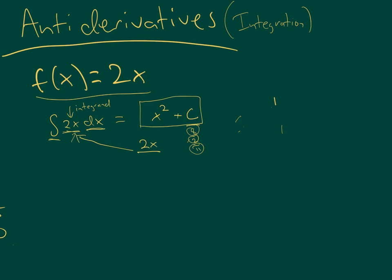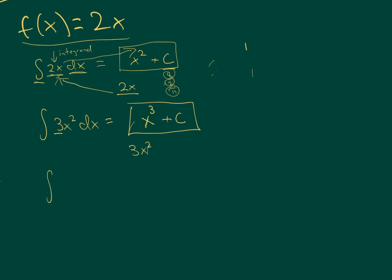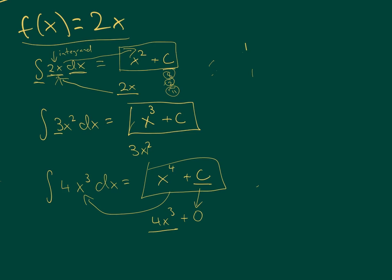Let's try another one. Suppose we have the antiderivative of 3x squared. From the previous example, we saw that our exponent increased by 1. So let's suppose you have x cubed as your antiderivative. If we took the derivative of x cubed, we would end up getting 3x squared. So x cubed plus c does work as the antiderivative there. What if you had the antiderivative of 4x cubed? Same thing here — let's try to increase the exponent by 1. If x to the 4th plus c would work, the derivative of x to the 4th is 4x cubed, and the derivative of c is 0. So x to the 4th plus c works.